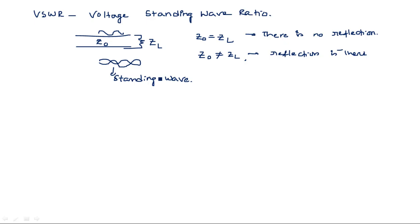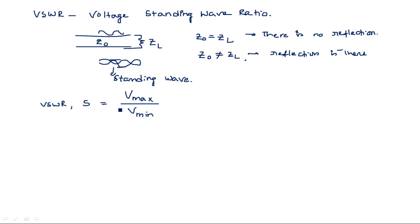So a standing wave is nothing but the superimposition of the transmitted signal and the reflected signal. It occurs when the characteristic impedance is not equal to the load impedance. We calculate what is the maximum amplitude and what is the minimum amplitude of this signal, and that ratio is nothing but the Voltage Standing Wave Ratio.